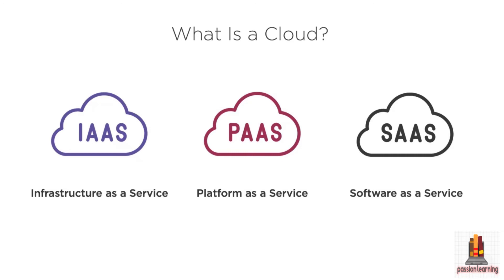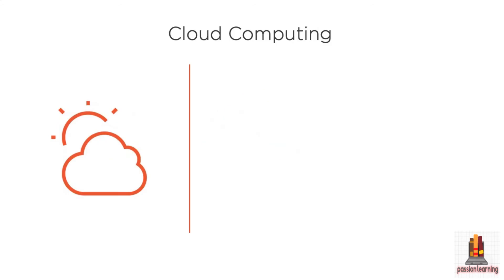Finally, there's Software as a Service, which is an even higher level of abstraction where you're purchasing or subscribing to an application or software. The most common examples are things like email — Gmail or Microsoft Exchange in Office 365 — but there are also examples where you might be buying a service that plugs into your solution to manage things like sending text messages, receiving replies, or running email campaigns.